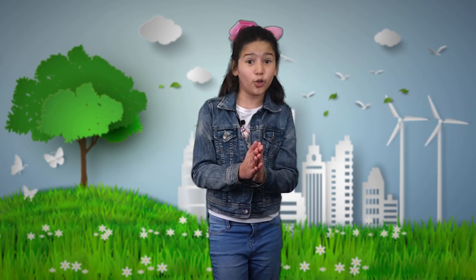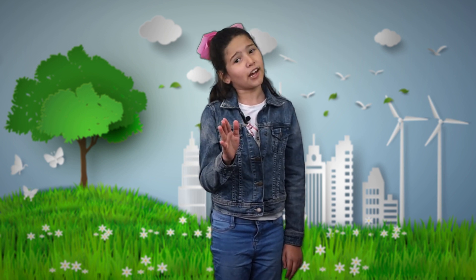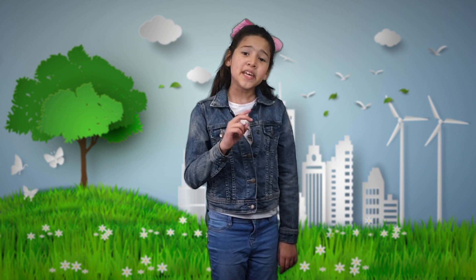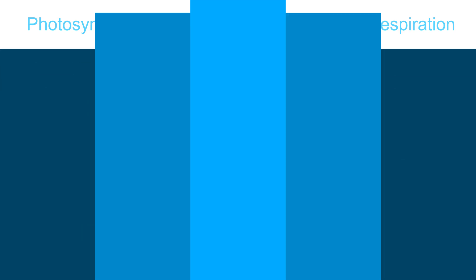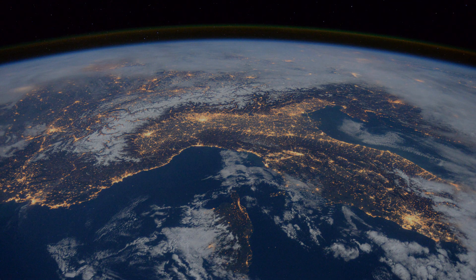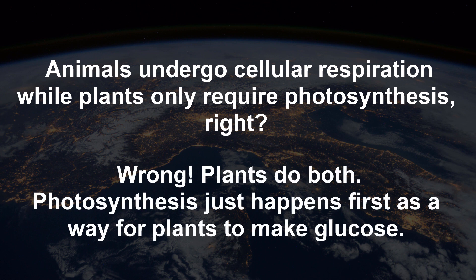Plants are essential for any animal life on earth, especially human life. Think about these two very interesting facts about plants. Humans need oxygen in order to survive. We use oxygen, among other things, to produce cellular energy in the form of ATP in a process called cellular respiration, and one of the waste products of that process is CO2, or carbon dioxide gas.